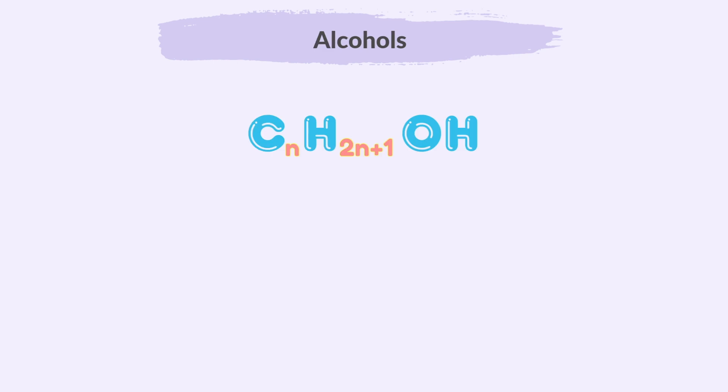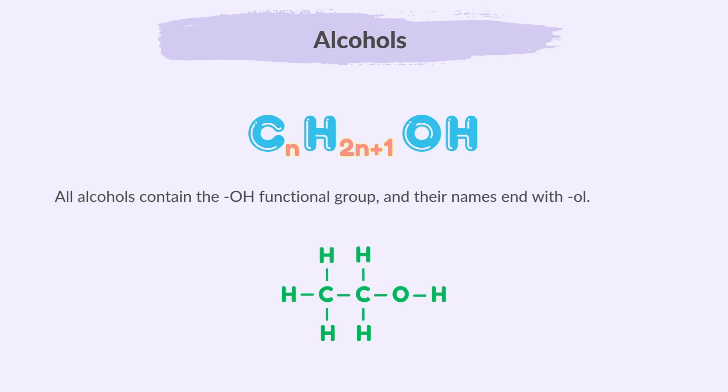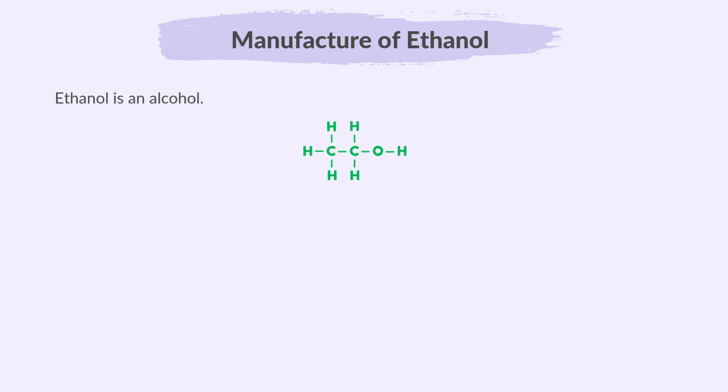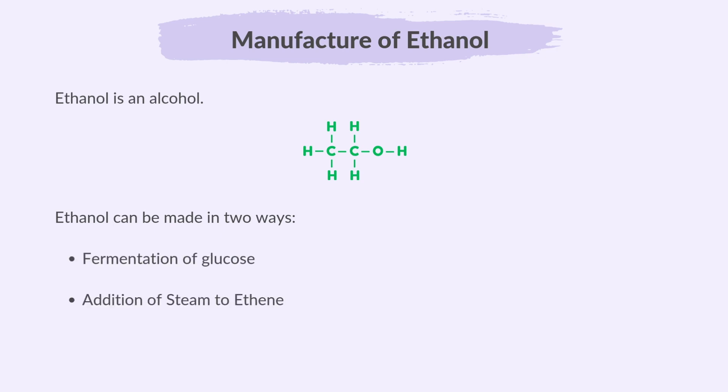Alcohols: all alcohols contain the OH functional group and their names end with -ol. Ethanol is an alcohol. Ethanol can be made in two ways: fermentation of glucose, and addition of steam to ethene.